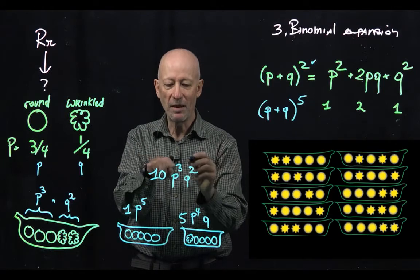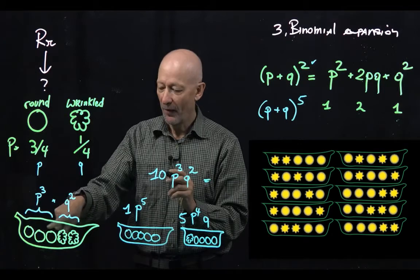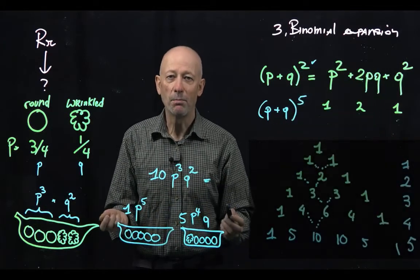This is the probability of having any type of pod that has 3 round and 2 wrinkled. Pretty simple, right?